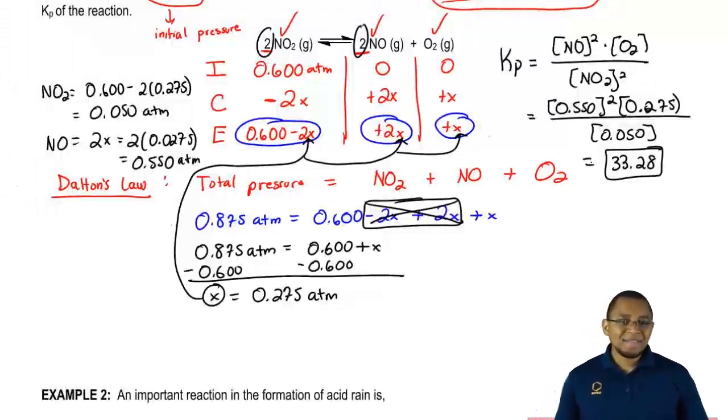Now to do this question, you had to have a knowledge of Dalton's Law and remember that deals with gases and then apply that concept to this new idea of an ice chart. So it's kind of taking a little bit of old information combining with some new information in order to obtain our Kp value.